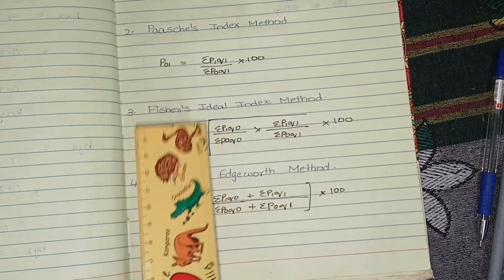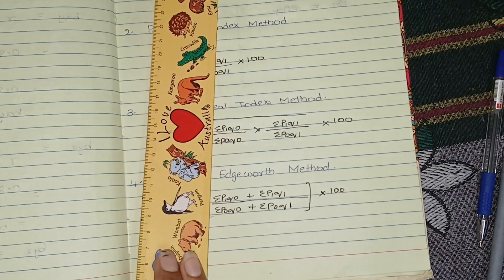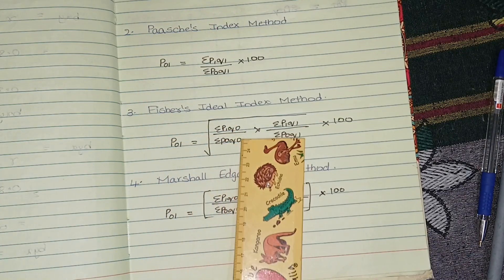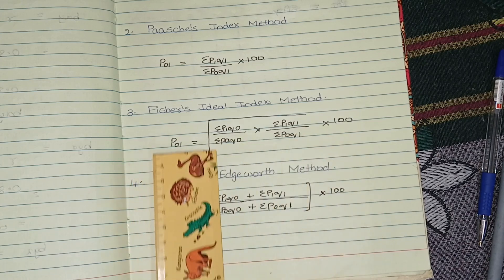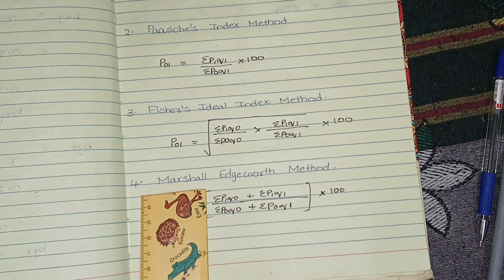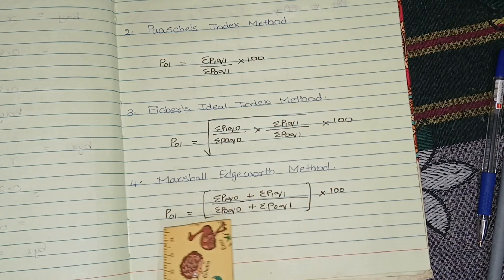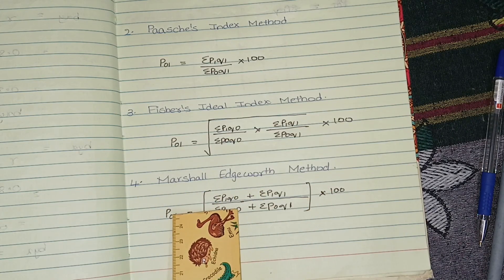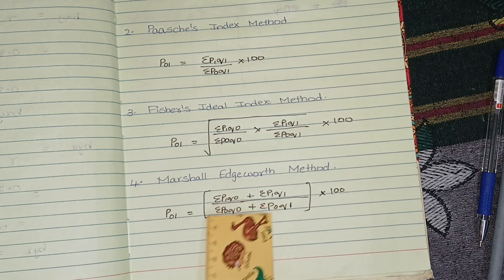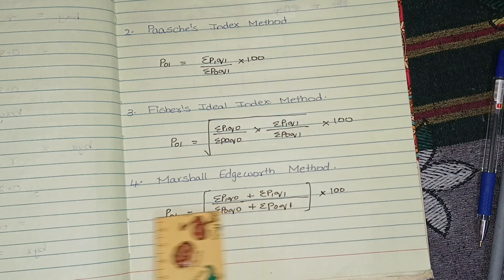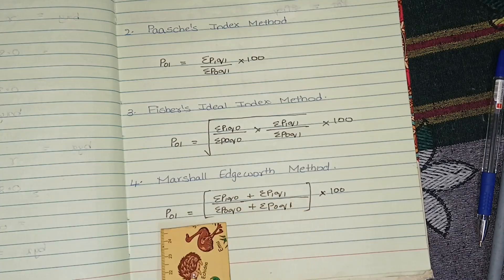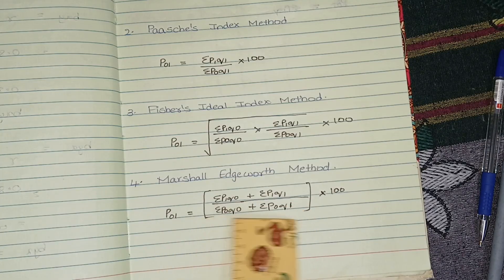Fisher's ideal index formula is: √[(p1q0/p0q0) × (p1q1/p0q1)] × 100. The fourth one is Marshall-Edgeworth method. The formula is: (p1q0 + p1q1) / (p0q0 + p0q1) × 100.